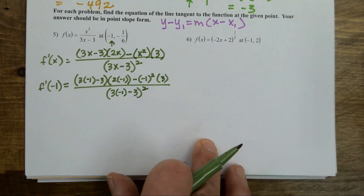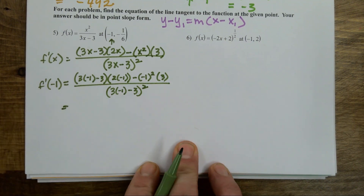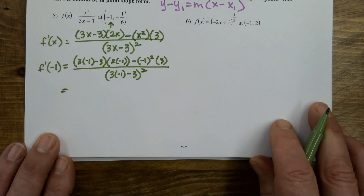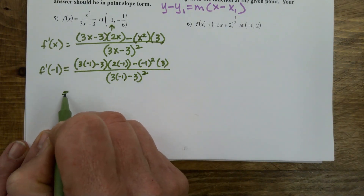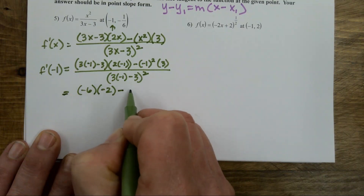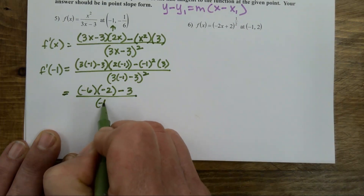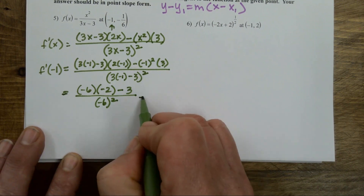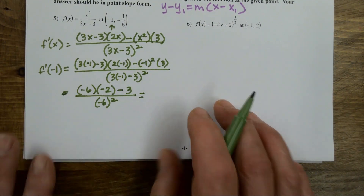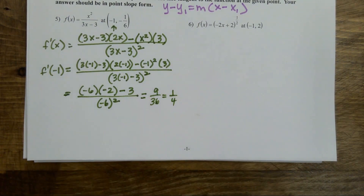You obviously don't have to write all of that down. Some of you might just be able to plug it into your calculator right away, and that's fine. On the notes I'm going to show a little bit more because it's something for you to look back at. So it looks like I get negative six times negative two minus three over negative six squared, or nine thirty-sixths, or one fourth.